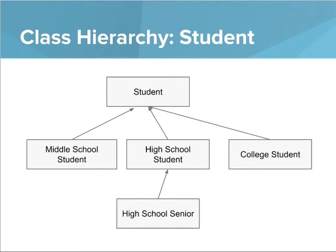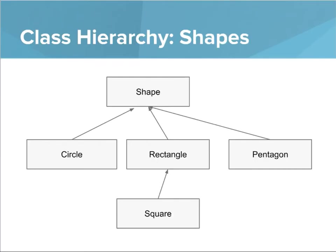Here's an example for student. We've worked a lot with our example student class, but you might be working with more specific types of students — like a middle school student, a high school student, or a college student. They'll still share some of the same properties of the more general student, but they might have their own features. We even have a class representing a high school senior, which is a high school student but a specific kind. There's also a shapes hierarchy: a shape is at the top, and a circle, rectangle, and pentagon are all shapes. A square is a specific type of rectangle.